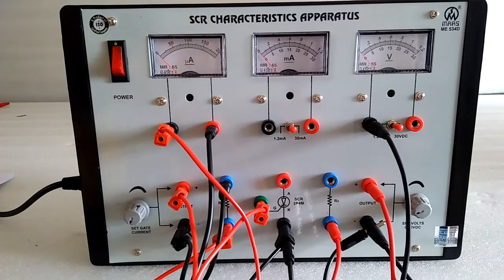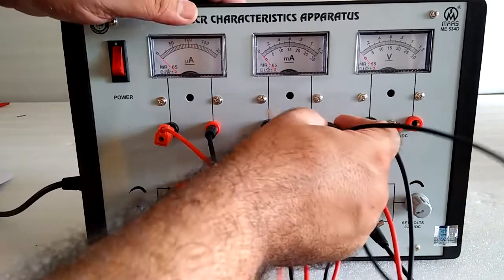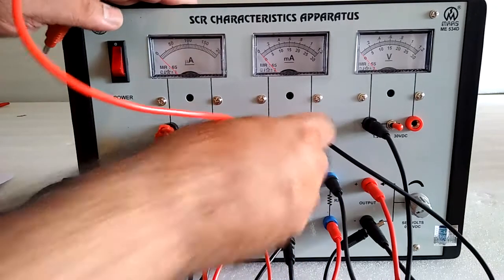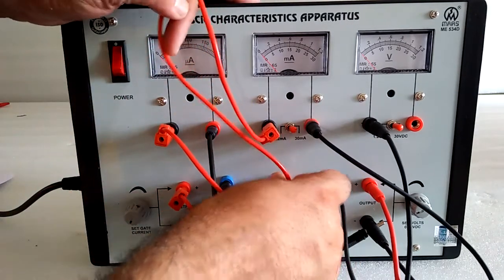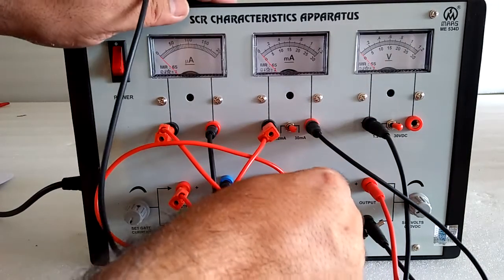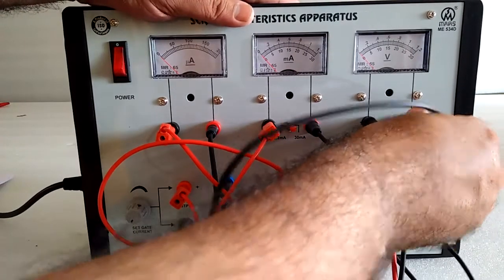And the second end goes to the current meter. This goes to the current meter, then here in the anode, same goes to the volt meter positive.